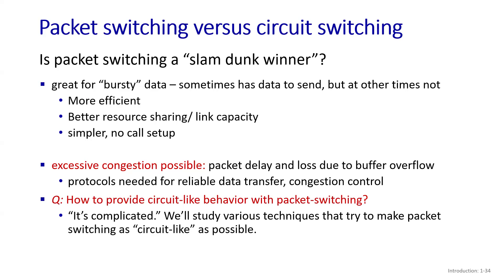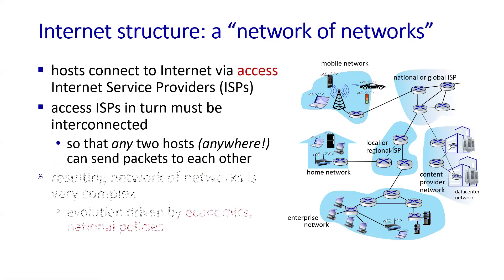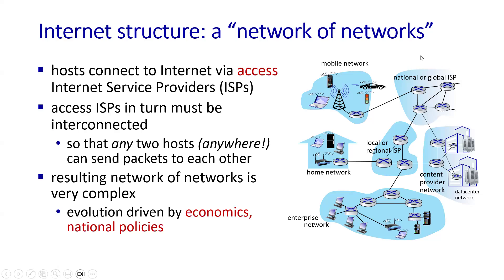It is also worth mentioning that we can get circuit-like behavior in packet switching, but we will discuss that later. Now let's have a look at the internet structure. The internet is basically a network of networks, where many ISPs are connected to each other, making it possible for one user on the edge of the network to send packets to a user on the other side.